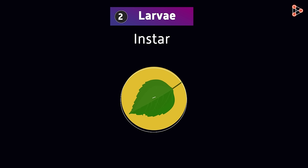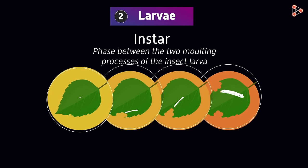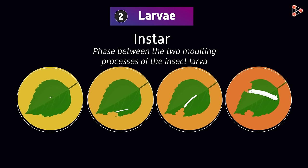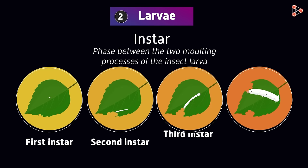In literal terms, instar means the phase between the two molting processes of the insect larva. So in this case, we can say the larvae grow into first instar, second instar, third instar, and so on till they feed themselves enough.